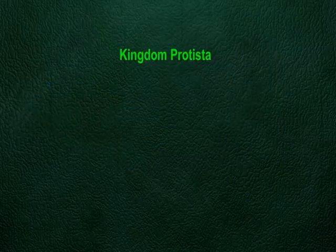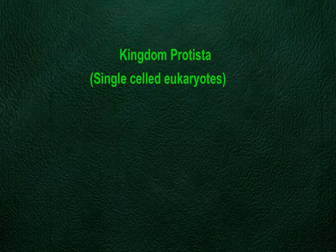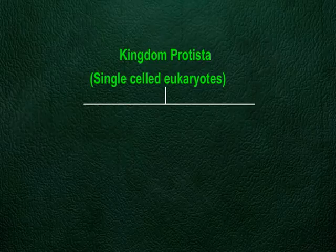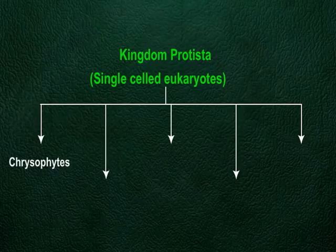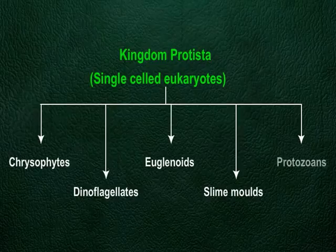Protists are all single-celled eukaryotes. Kingdom Protista is divided into five major classes: Chrysophytes, Dinoflagellates, Euglenoids, Slime Molds, and Protozoans.